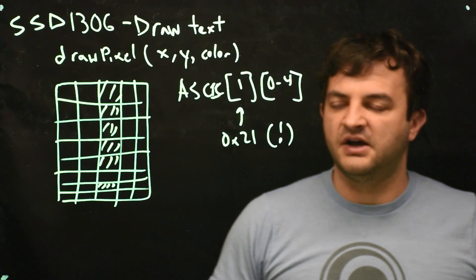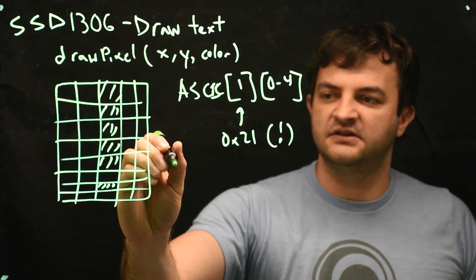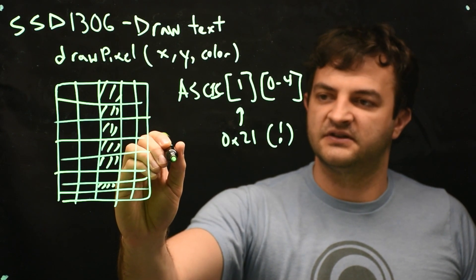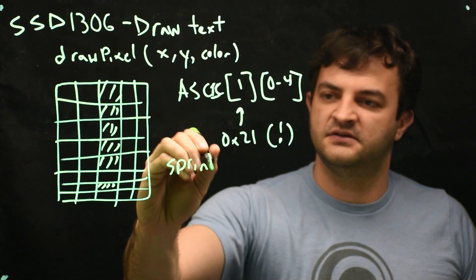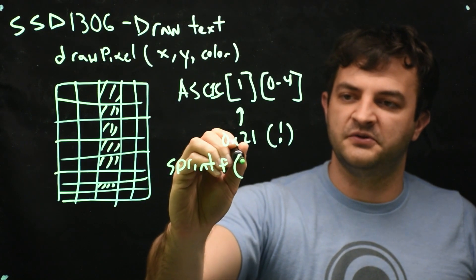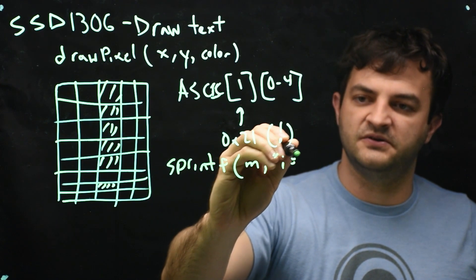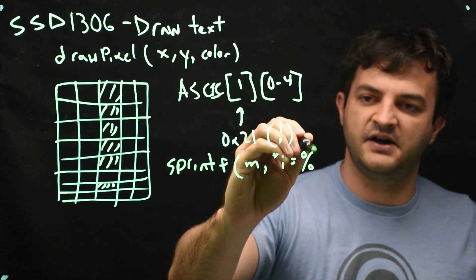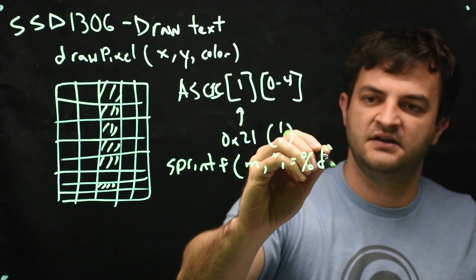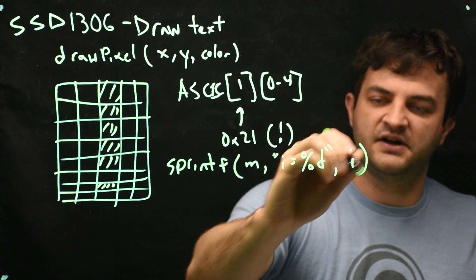So from big picture, we are going to use the sprintf function to try to generate some text. So for instance, I could say sprintf into a variable called maybe m. I want to say i equals the value of the variable i, so percent d, and then I would say my variable i.